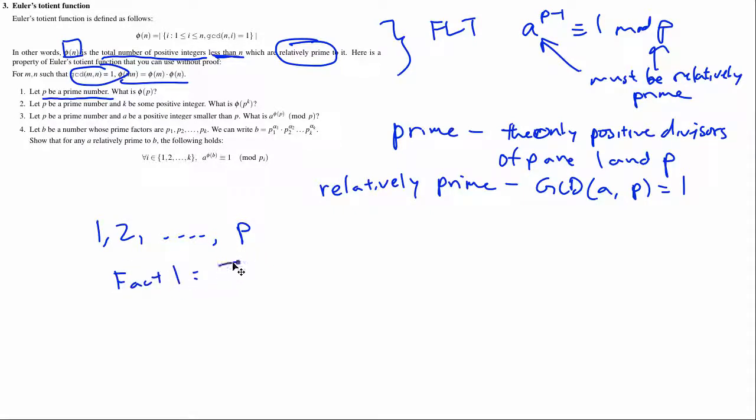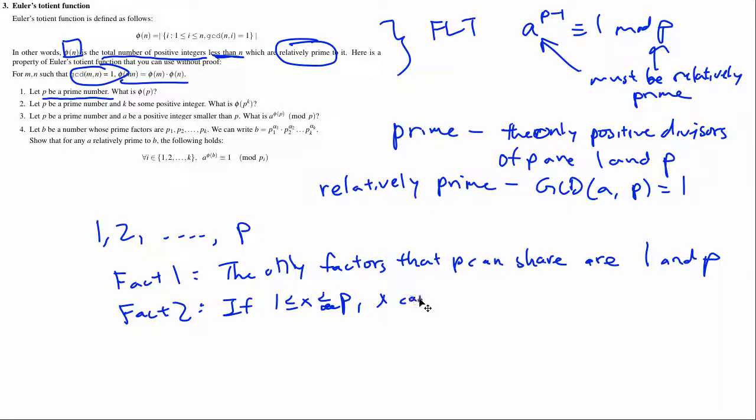the only factors that p can share, its factors are 1 and p. Fact 2, the numbers between 1 and p, if x is between 1 and p, x cannot share the factor p. So given the factors of x, right? Factors x and the factors of p, which is just 1 and p,